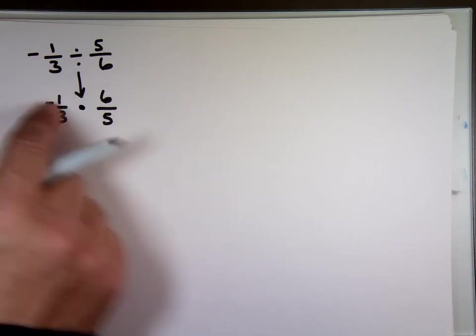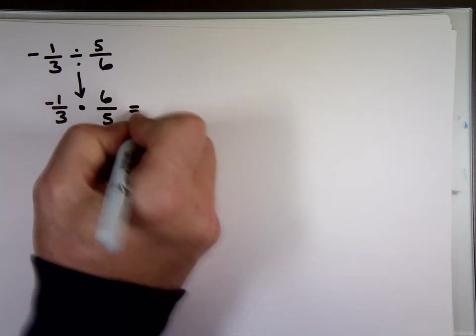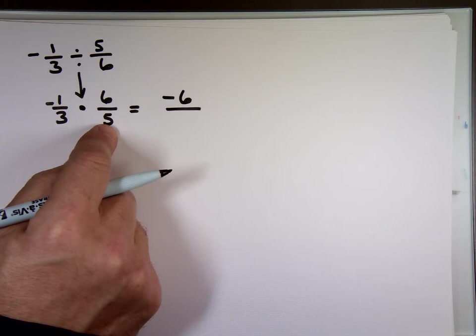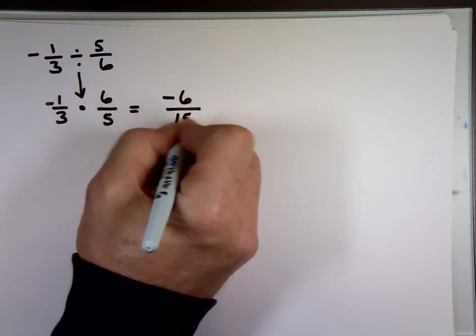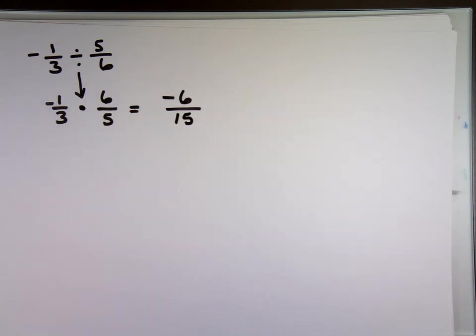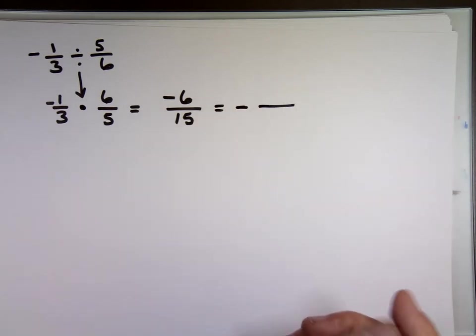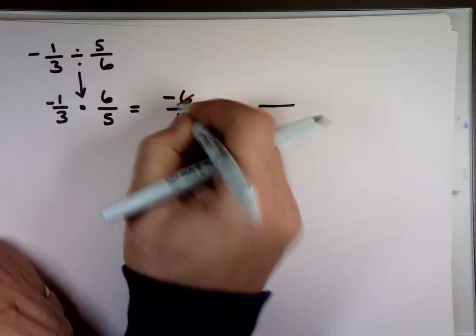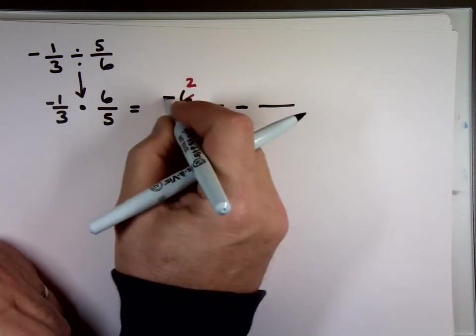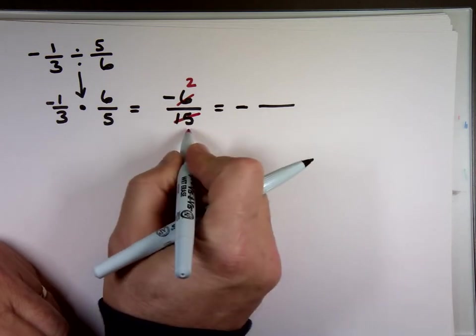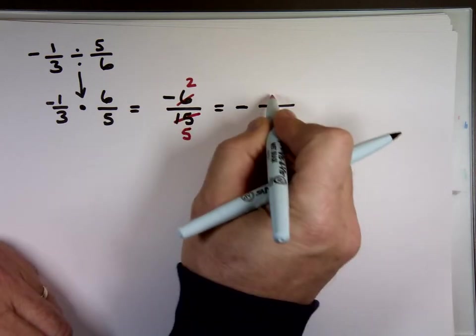So negative one times six, which is what? Negative six divided by three times five, which is 15. If I leave my answer like this, I got it wrong. Because they want me to simplify it. Let's look at the six and the 15. Can you divide them by anything? By three, this is what? I'm leaving the minus in the front, so I'm not getting rid of it. By three, this is what? Five. So it's negative two over five.